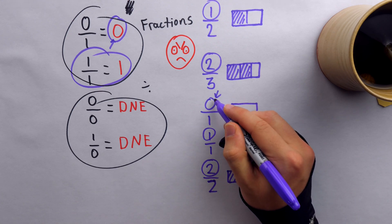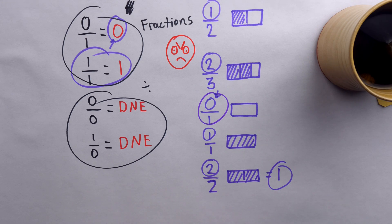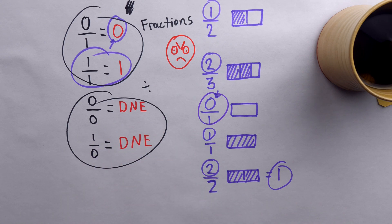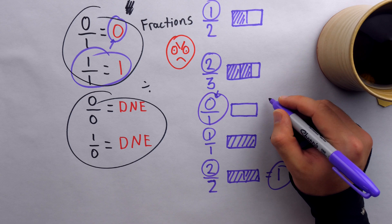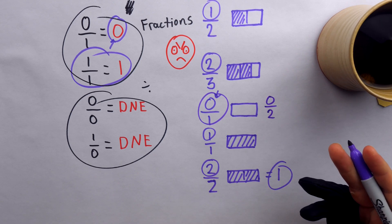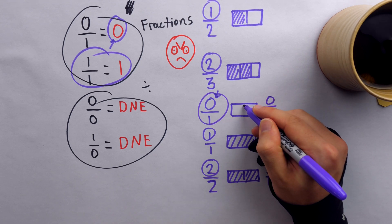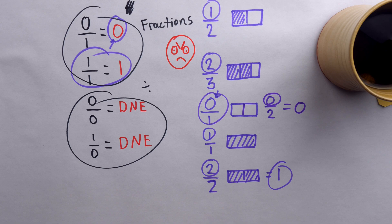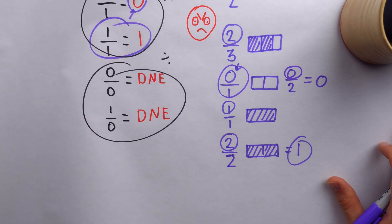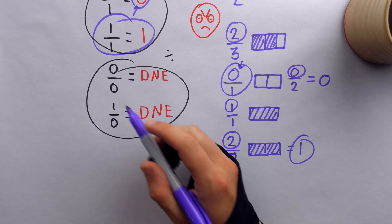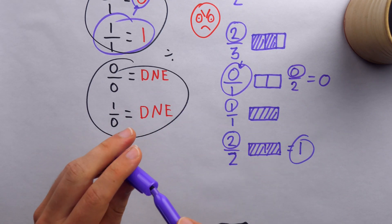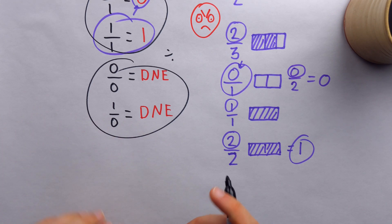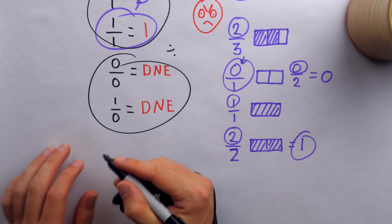Of course, we could also change the denominator in the fraction zero over one and its value would not change, as long as we don't change the denominator to zero — that's when you get into problems. For example, zero over two would also be zero, because there's a whole, we've split it into two parts, and we don't have any of the parts, so we still just have nothing. Now, to understand those two equations that are not defined — zero over zero and one over zero — we need to understand division and what division really means. So let's look at an example: six divided by three.